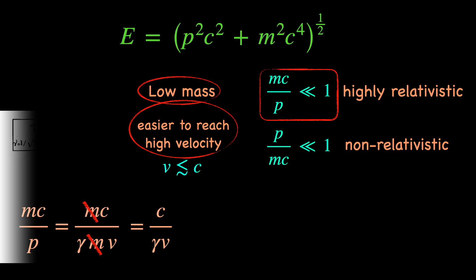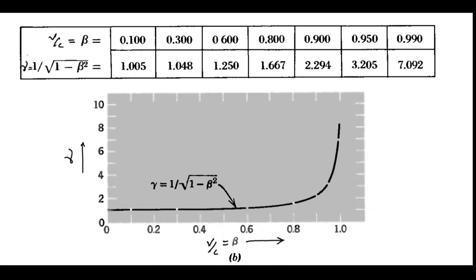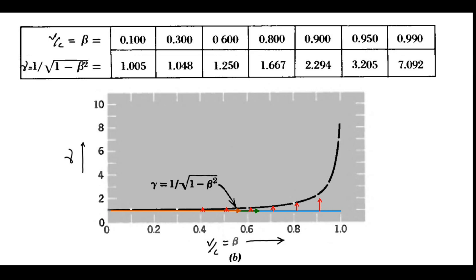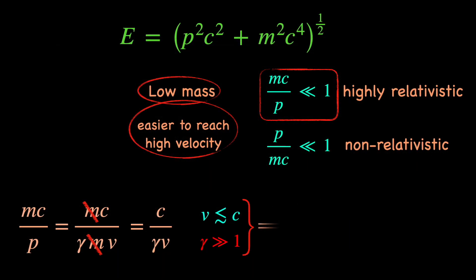Now, at the higher side of the relativistic velocity, beyond the 50-60% of the speed of light mark, the Lorentz factor rapidly grows from 1 to some extremely high values, making gamma v way bigger than c. Thus, in the low mass limit, the ratio mc upon p can be much smaller than 1.